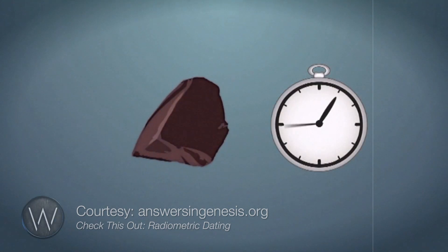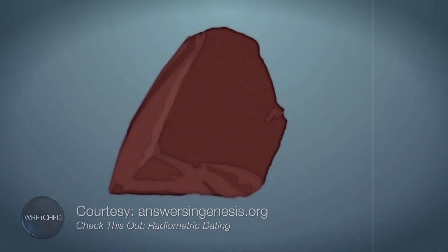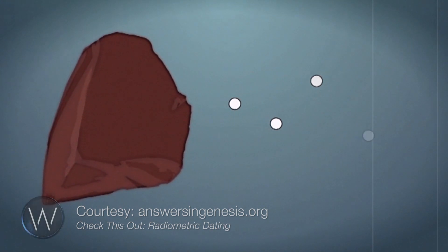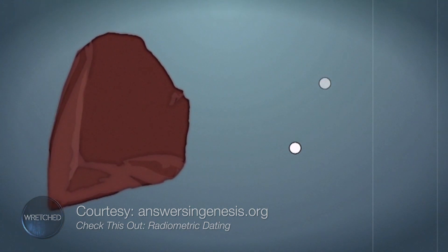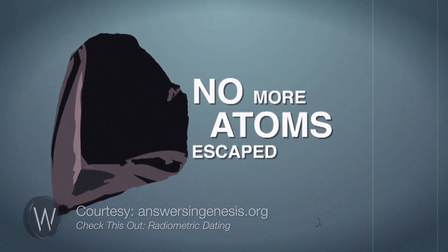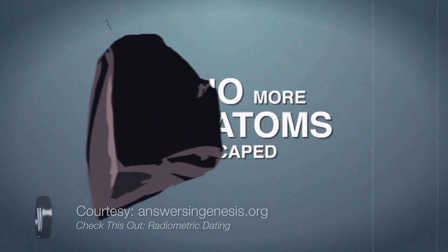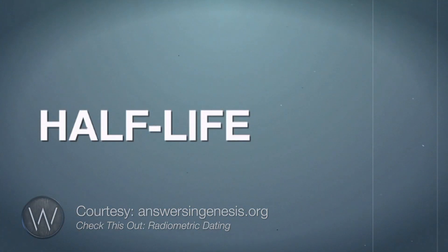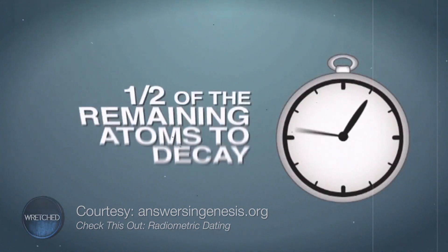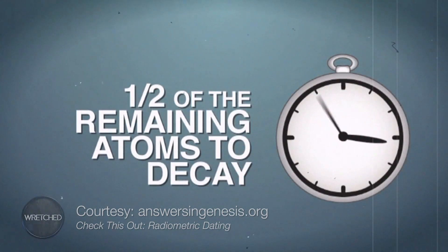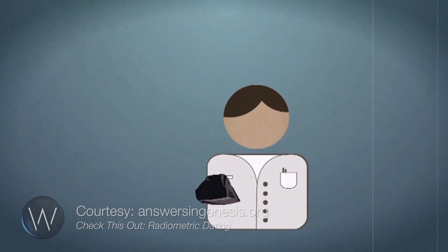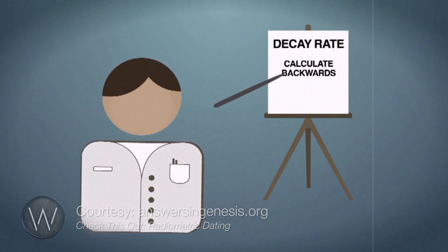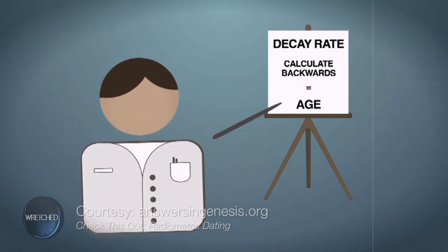The dating clock started when the rock cooled. During the molten state, it is assumed that the intense heat forced any gaseous daughter elements to escape. It is assumed that once the rock cooled, no more atoms escaped, and any daughter element now found in the rock is a result of radioactive decay since that rock formed. The decay rate is measured in terms of half-life — the length of time it takes half of the remaining atoms of a radioactive parent element to decay.